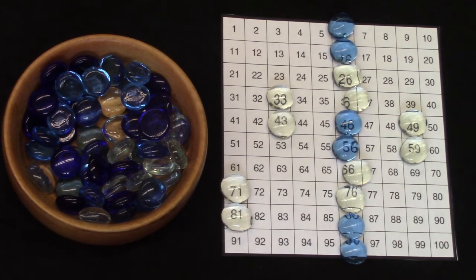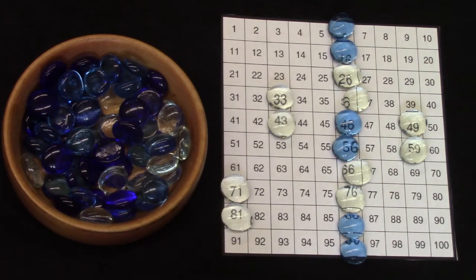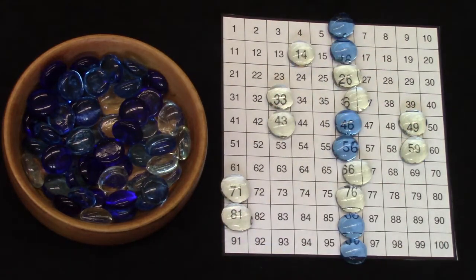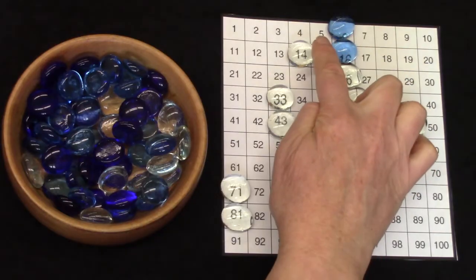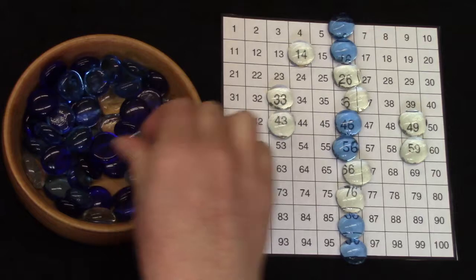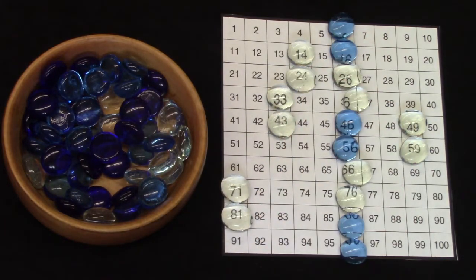Today I would like for you to explore your 100s chart. Pick a number, any number, like the number 14. And then add 10 to that number: 1, 2, 3, 4, 5, 6, 7, 8, 9, 10. See if you can guess what the answer is going to be before you count it. 14 plus 10 is 24.